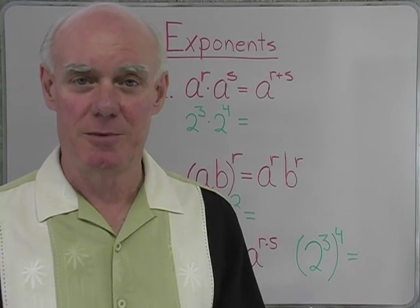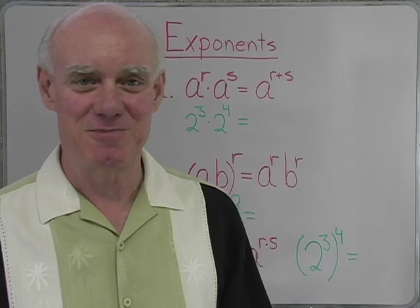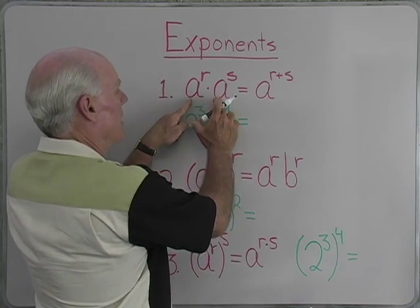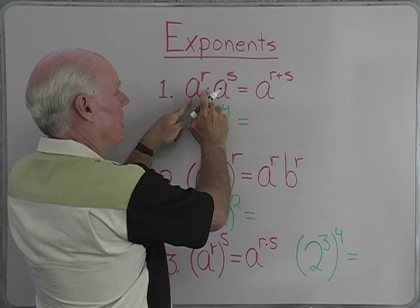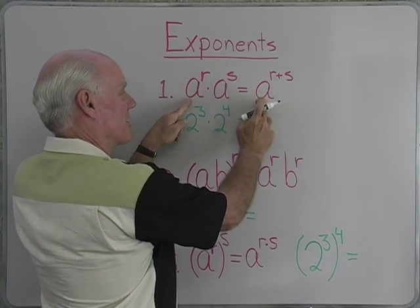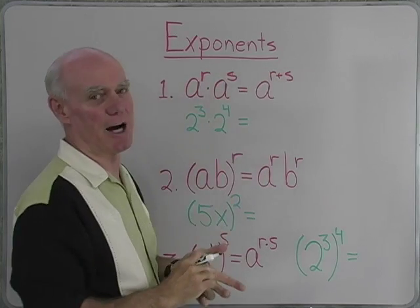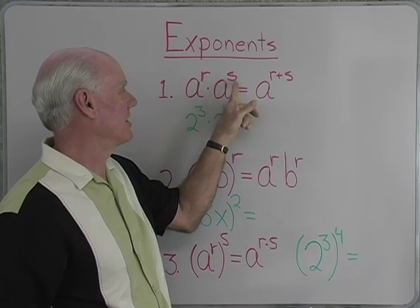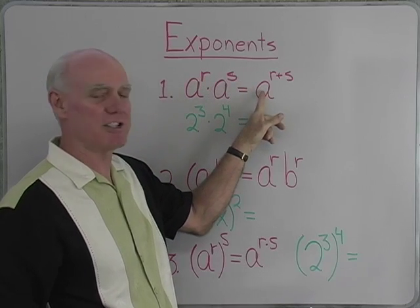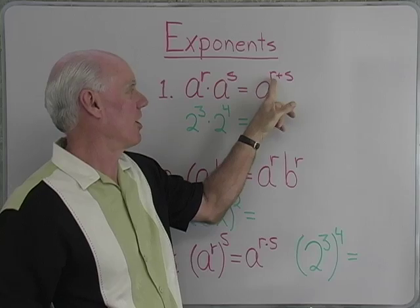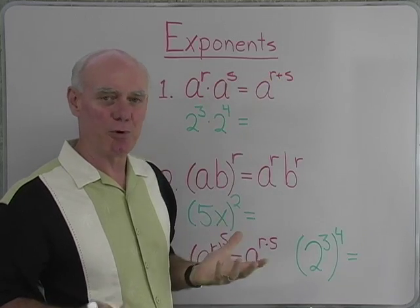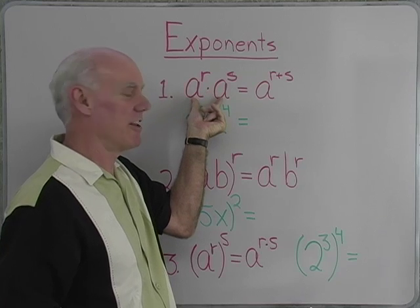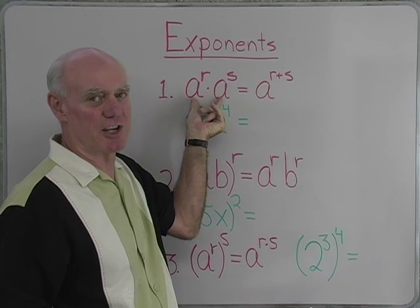Here's a little review of some of the properties of exponents. Remember that if we have the same base with multiplication, it's that same base raised to the sum of the powers. So a to the r times a to the s is a to the r plus s. All that's important here is that it's multiplication and the bases are the same.